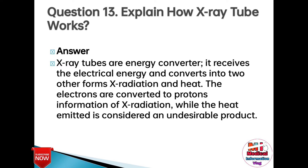Question 13: Explain how an X-ray tube works. Answer: X-ray tubes are energy converters. They receive electrical energy and convert it into two other forms: X-radiation and heat. The electrons are converted to photons in the formation of X-radiation, while the heat emitted is considered an undesirable byproduct.